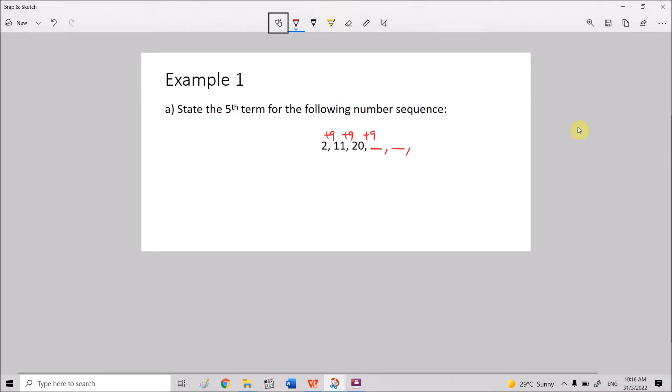So we add 9 to 20, you get 29. We add 9 again, you get 38. Hence the fifth term is equals to 38.